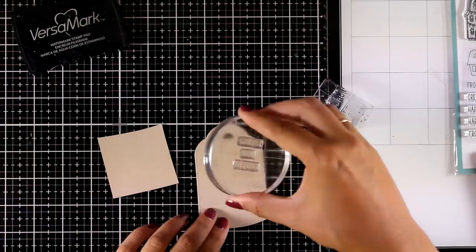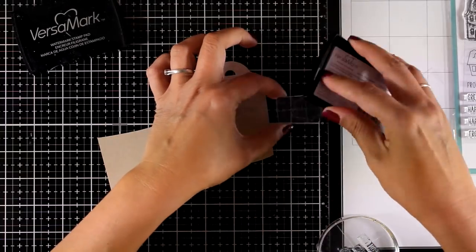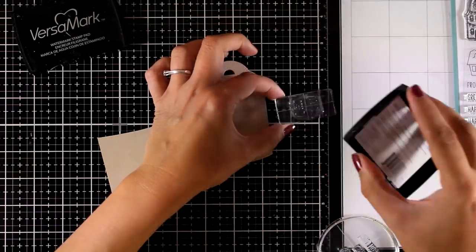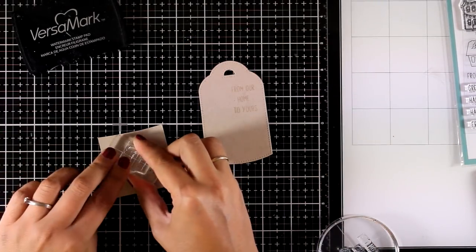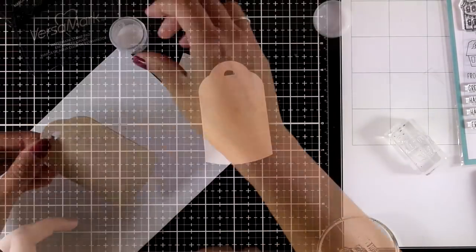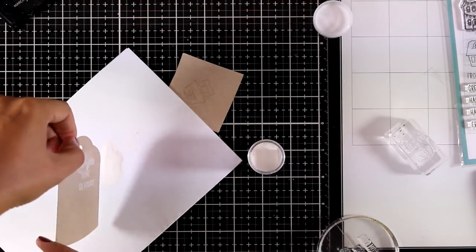So I am stamping my sentiment with Versamark ink and on the other piece of craft cardstock I'm going to stamp one of the houses from the stamp set. I am then going to apply white embossing powder and heat set everything.